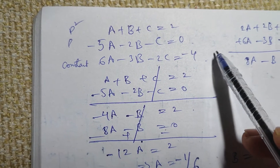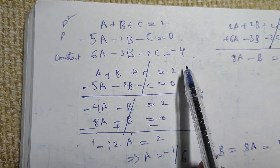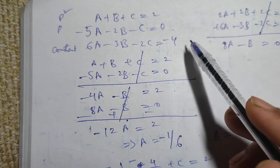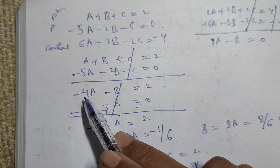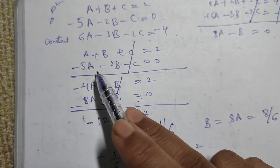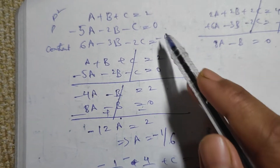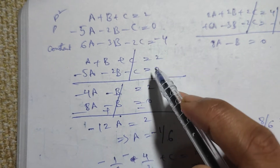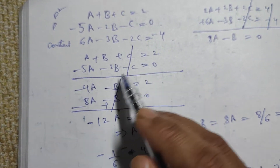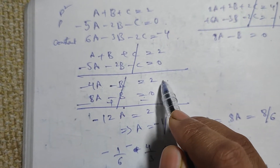We have three equations: A + B + C = 2 and -5A - 2B - C = 0. We take these two first because C can be eliminated directly by adding them. This gives us -4A - B = 2.